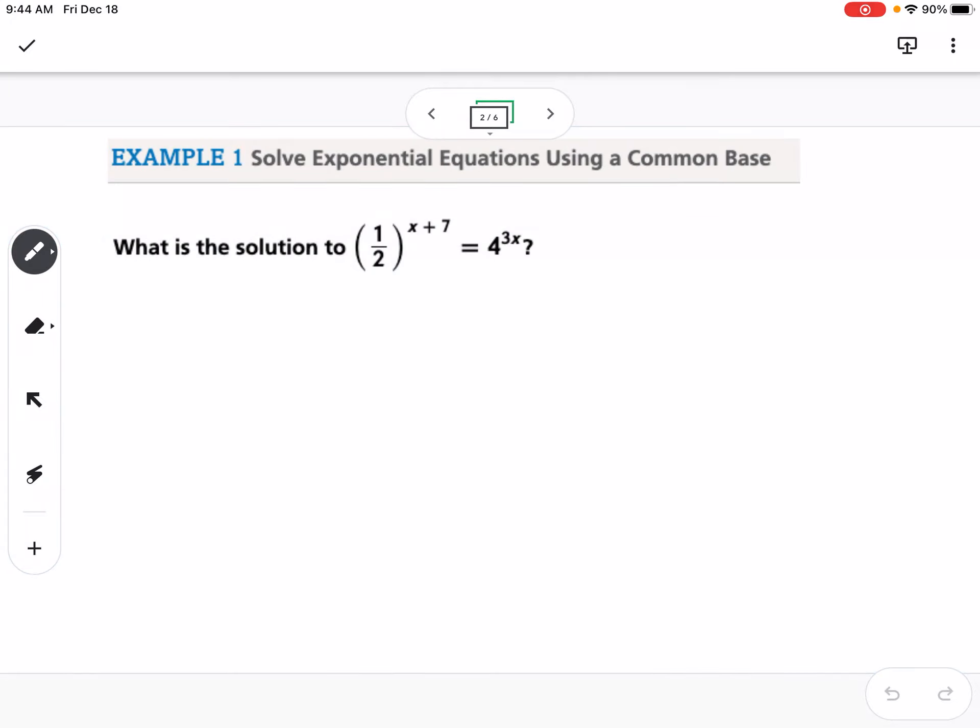Our first example is: what is the solution to one-half raised to the x plus 7 equals 4 to the 3x?